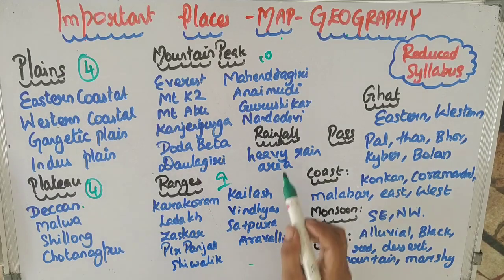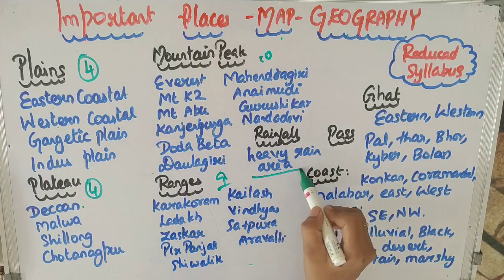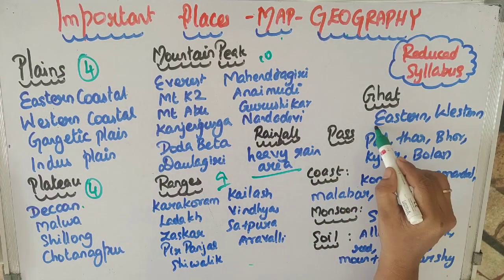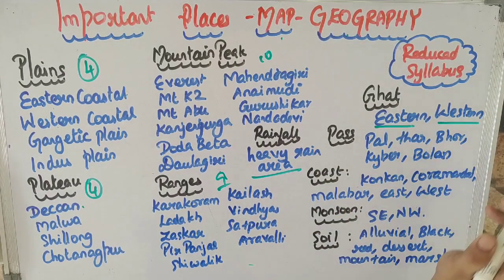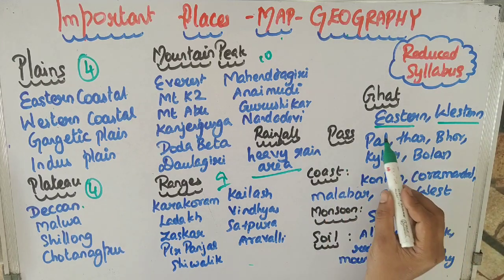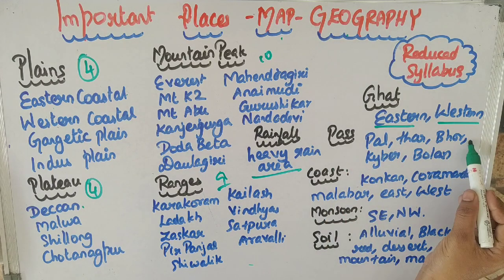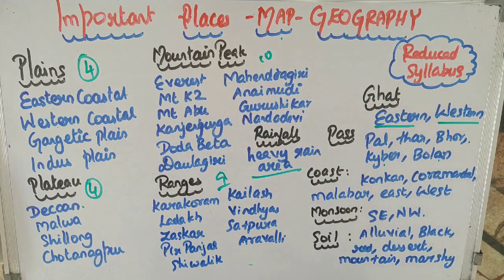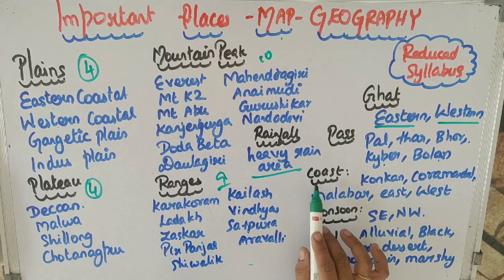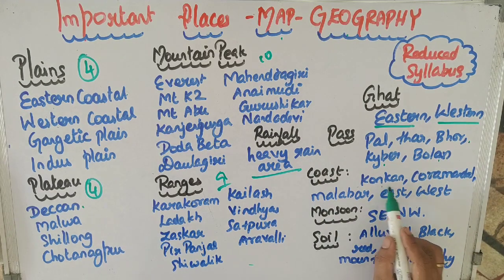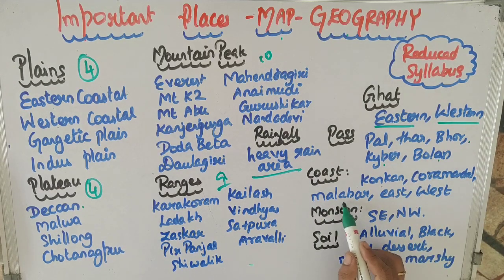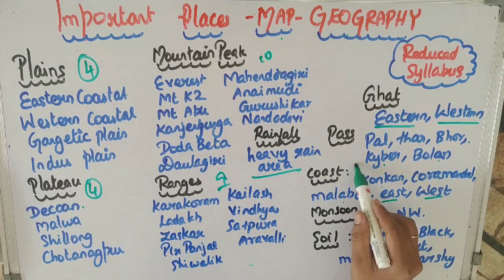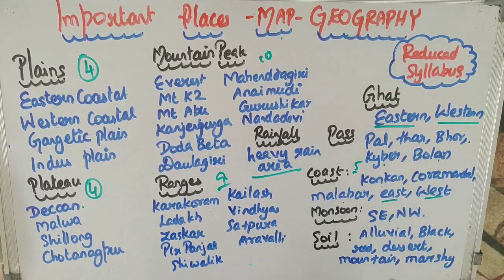We are going to look at the high rainfall area. There are passes: Tara, Boro, Khyber, and Poland. There are coasts like Coromentar Coast, Malabar Coast — from east coast and west coast.